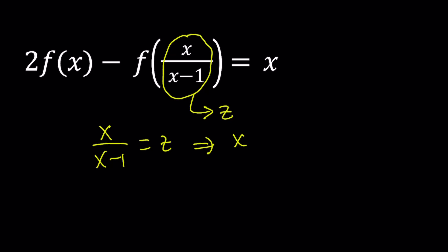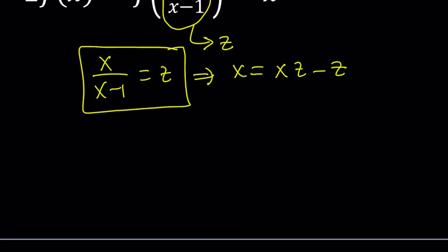From here we get x equals xz minus z. Now my goal is to solve for x from here. Let's put everything that contains x on the same side and the z on the left hand side.